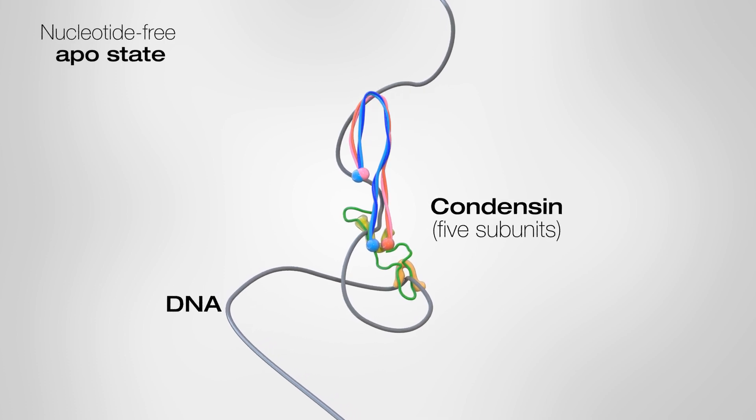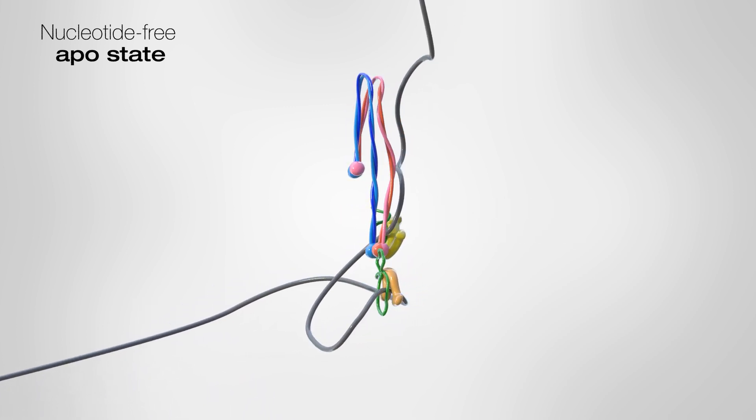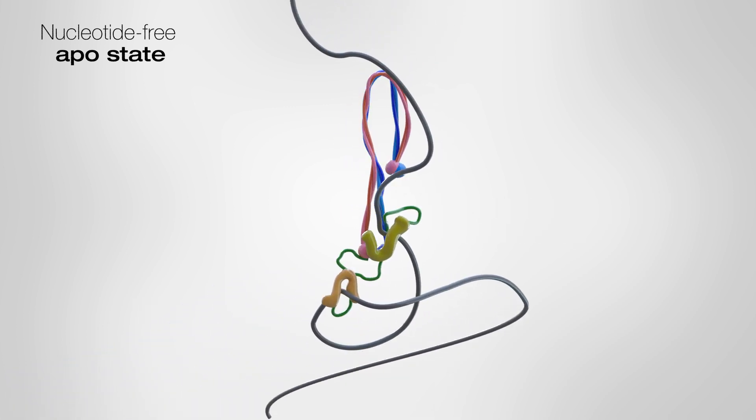Using a combination of cryoelectron microscopy, biochemistry, and single molecule microscopy, we discovered how condensin holds onto its loop, and how it uses ATP to enlarge that loop.